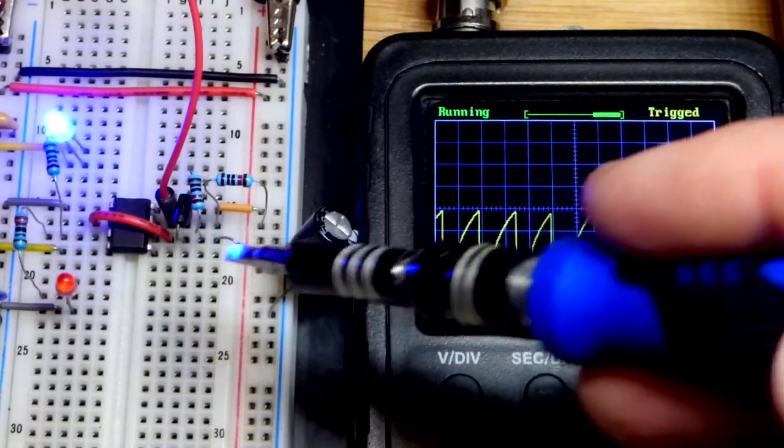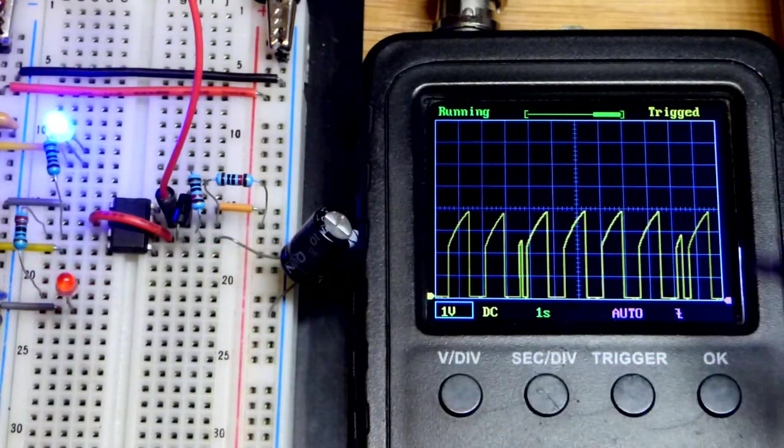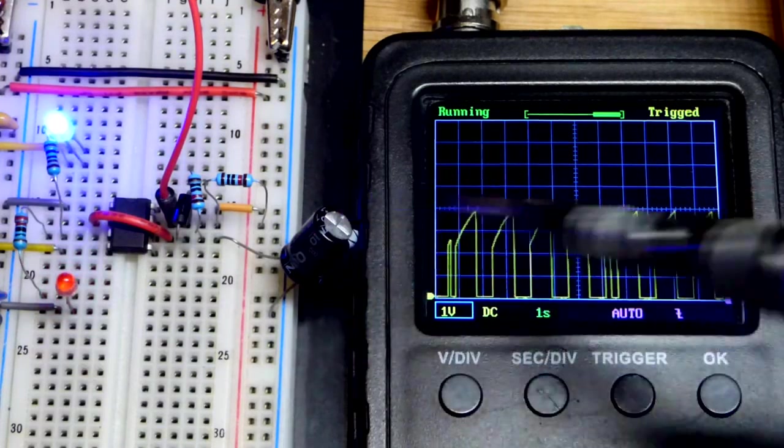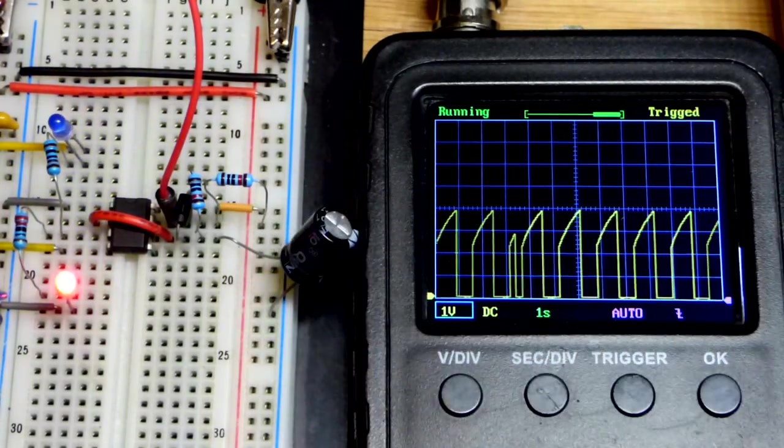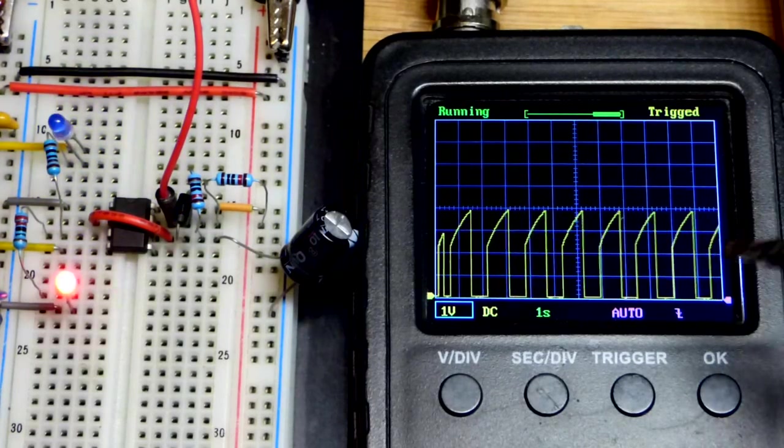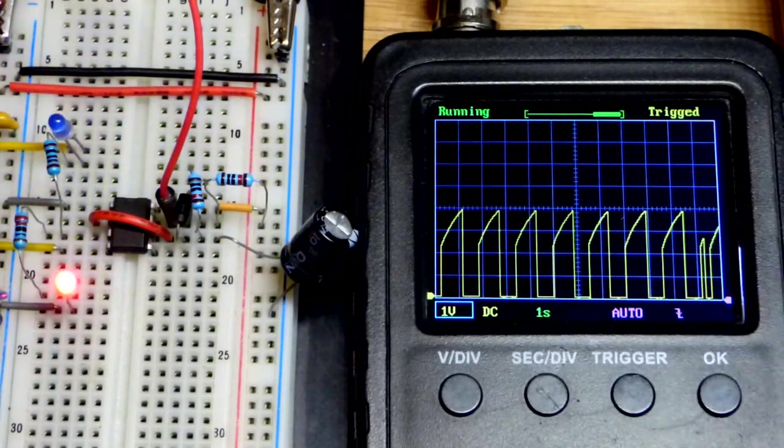As the capacitor charges, its voltage builds up and thus the voltage at the discharge pin builds up until it connects to ground to start discharging the capacitor again.